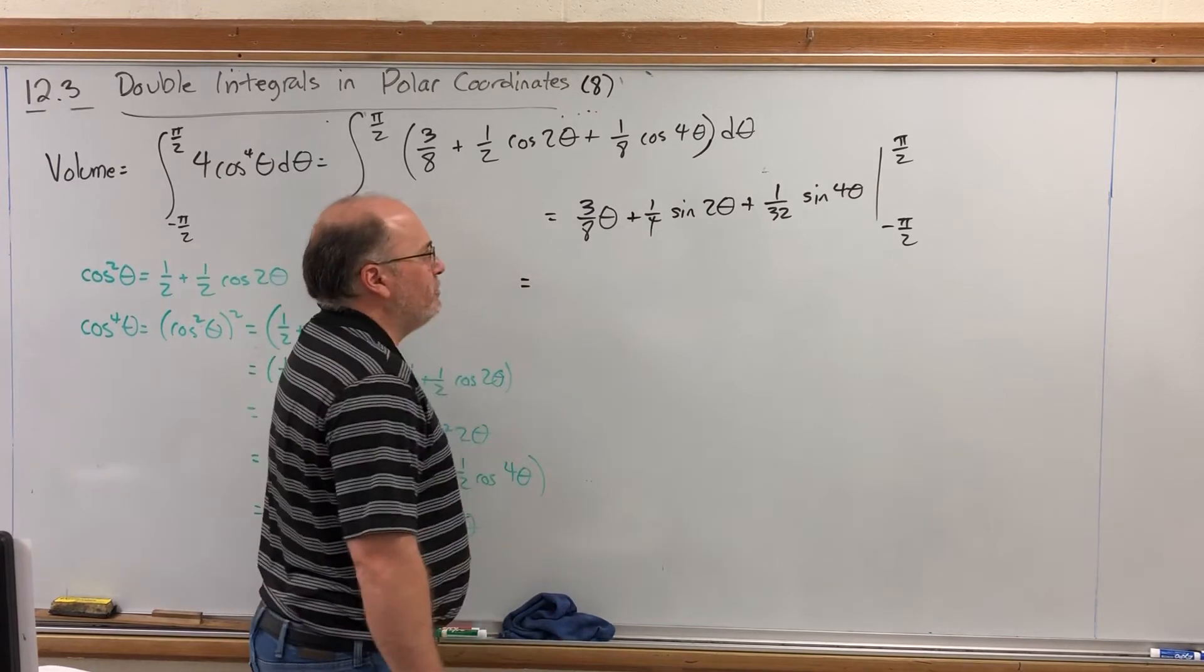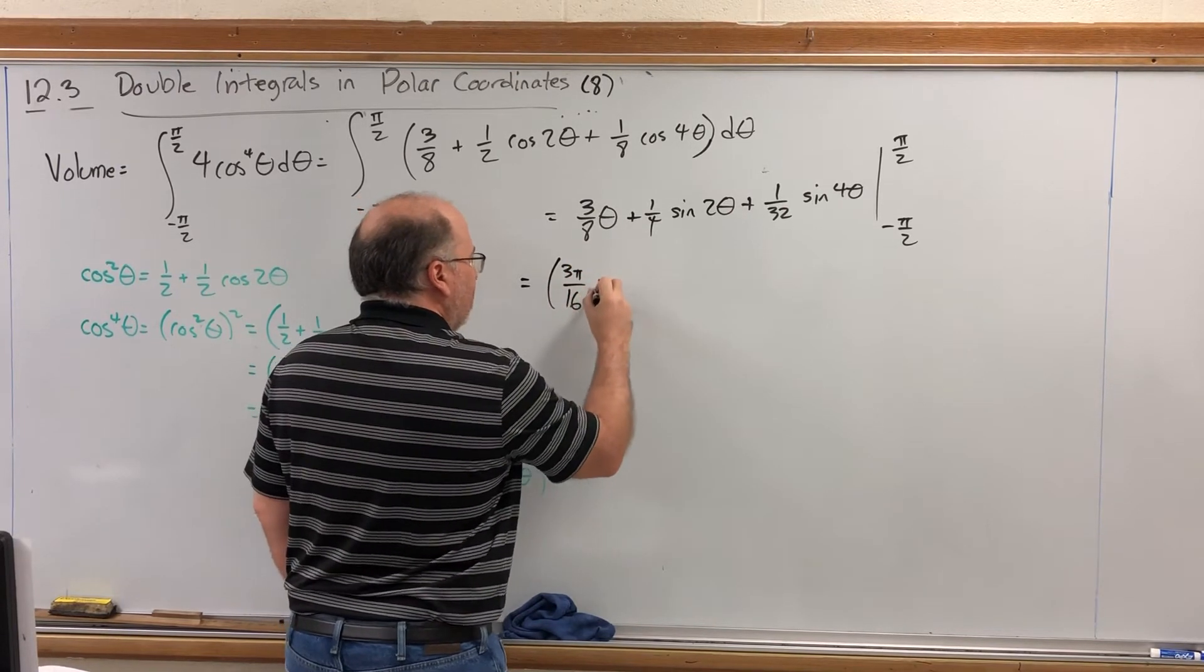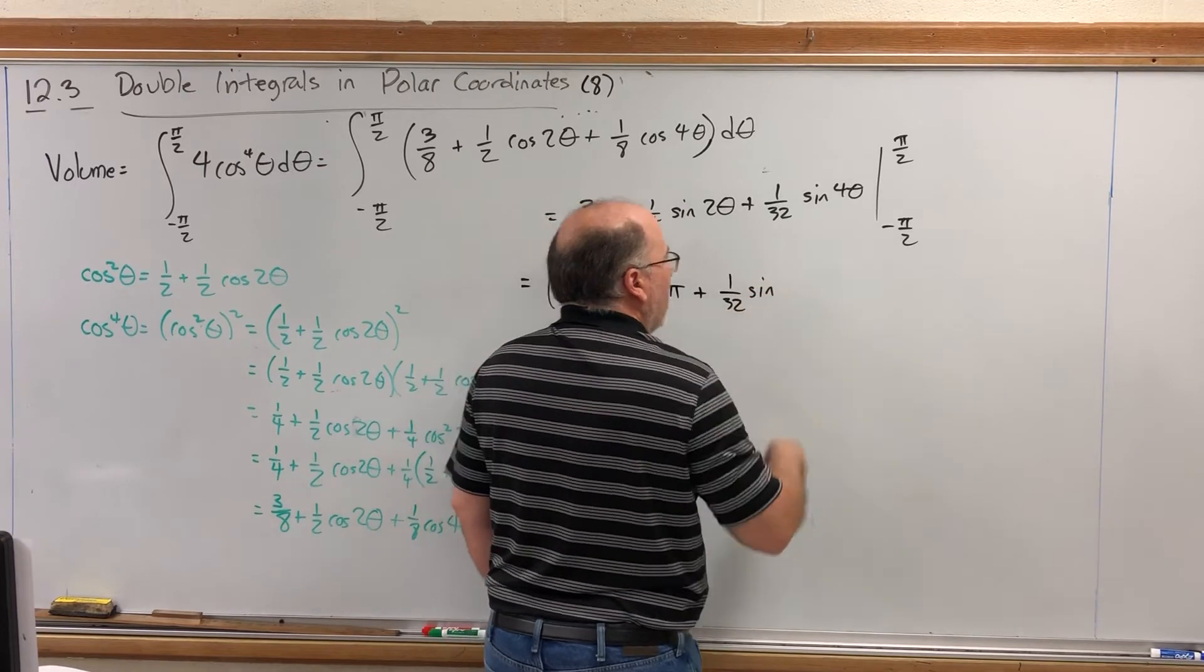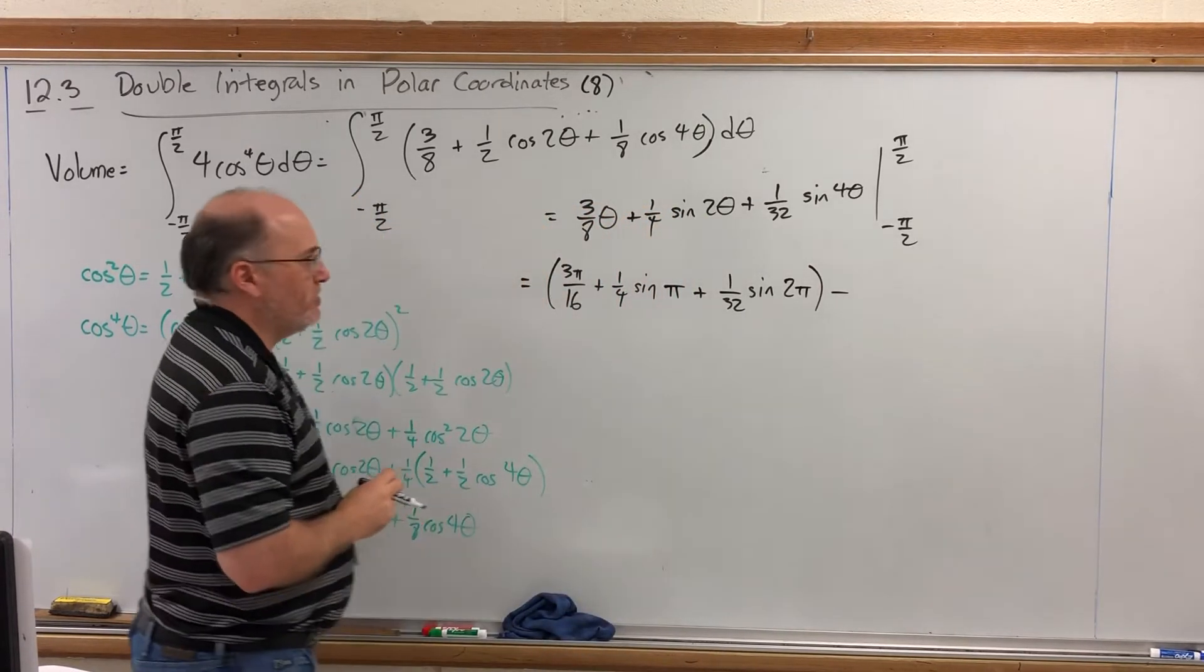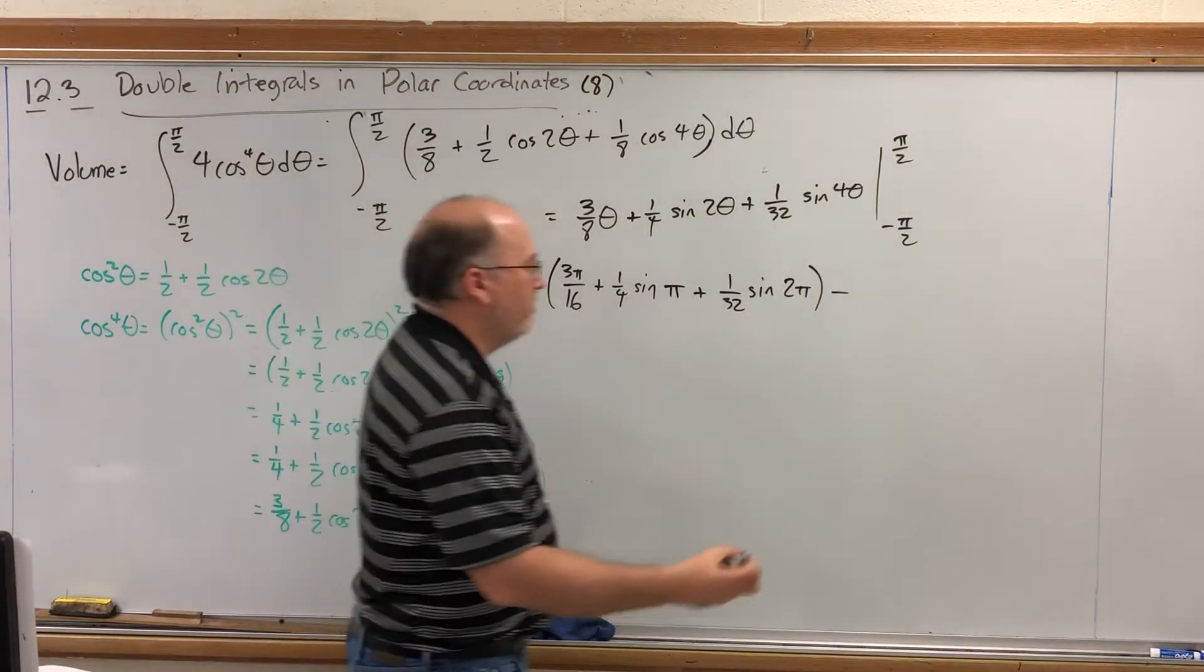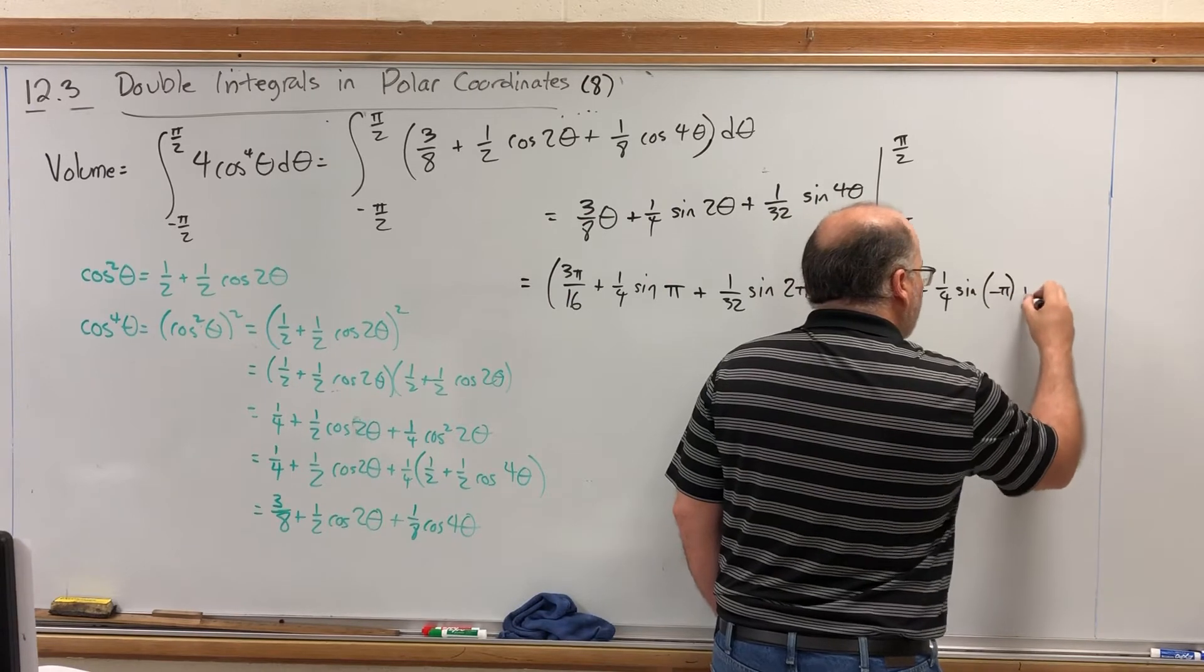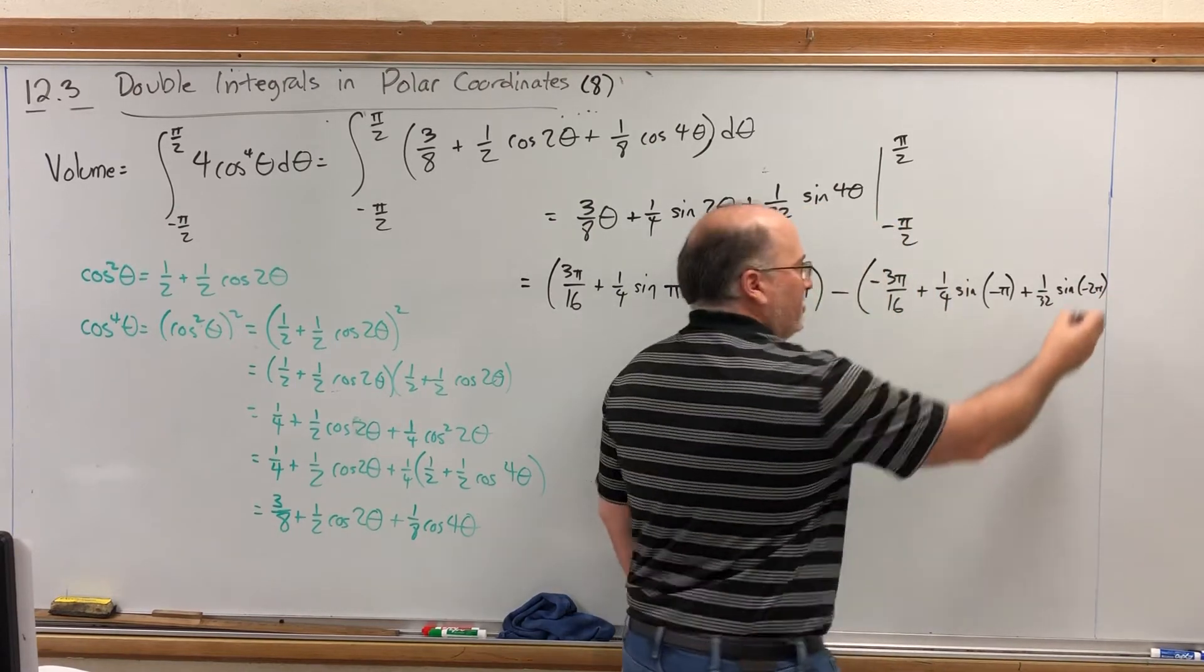If we substitute pi over two we get three eighths times pi over two which is three pi over sixteen plus one-fourth sine of two times pi over two is pi plus one thirty-second sine of four times pi over two is two pi. Now we have to subtract the results from substituting the negative pi over two which would be the exact same answers except all the pies would have negatives on them. So negative three pi over sixteen plus one-fourth sine of negative pi plus one thirty-second sine of negative two pi.